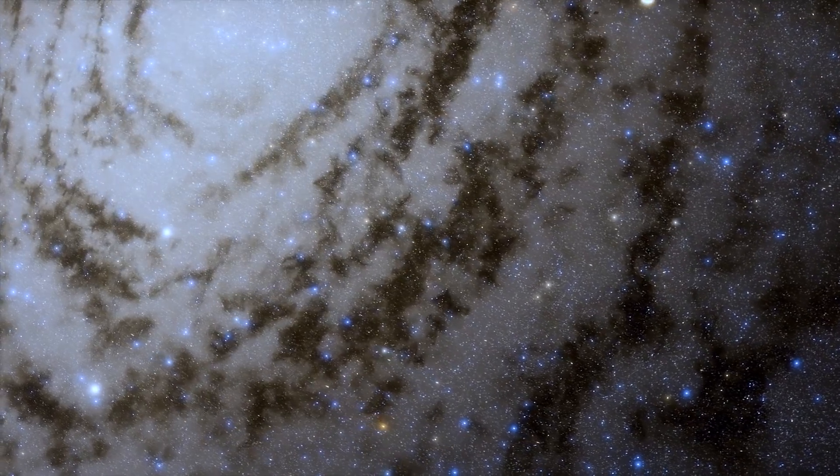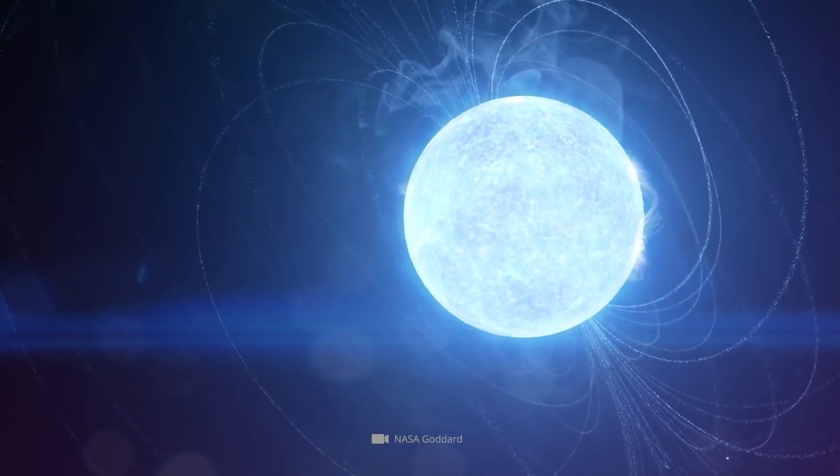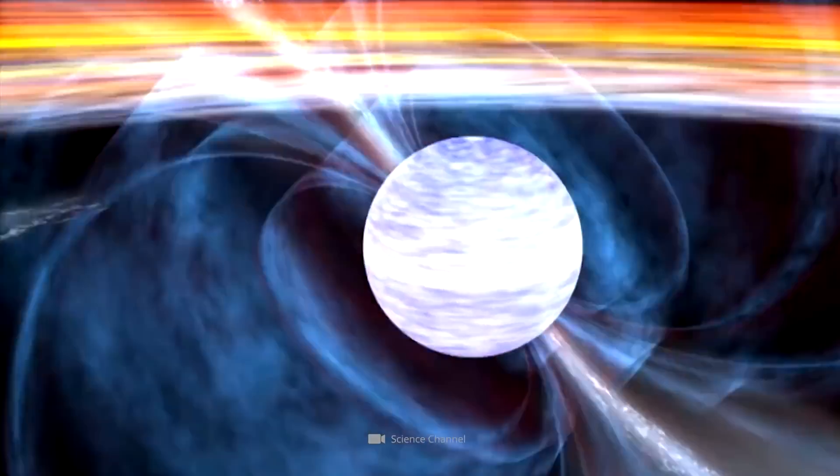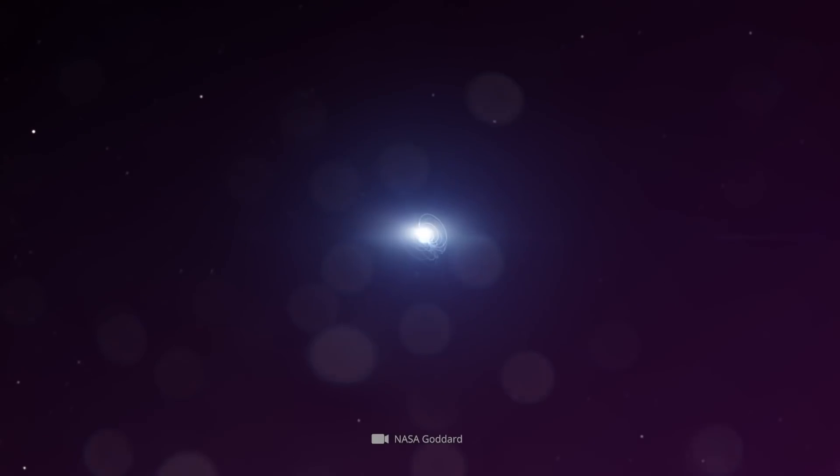The conventional wisdom among experts was that there should be exactly two of these regions, one at each magnetic pole. As the pulsar rotates on its axis at breathtaking speed, the hotspots shoot out characteristic radiation into the vast expanses of the cosmos.